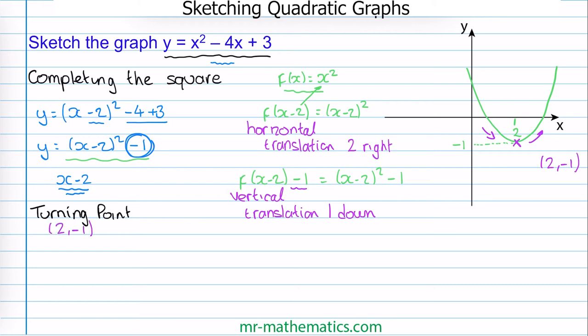Next we can identify the y-intercept, which is the y value when x equals 0. To work out the intercept I'm going to substitute x equals 0 into our equation: y is equal to x minus 2 squared minus 1. So y is equal to negative 2 squared, which is 4, take away 1, and this is 3. So this is our y-intercept.